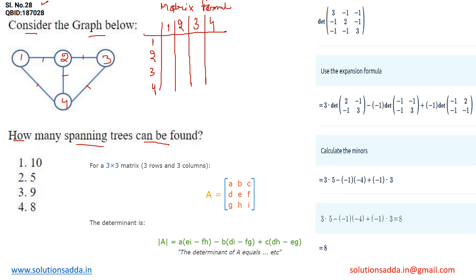The degree of vertex 1 is 2, because 2 edges are connected with node 1, so we write 2 in the diagonal. The degree of vertex 2 is 3, because 3 edges are connected with this vertex. The degree of vertex 3 is 2, and the degree of vertex 4 is 3.